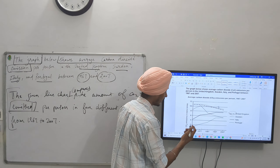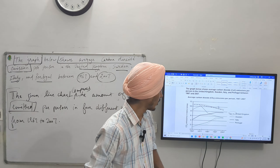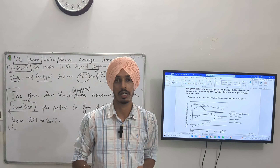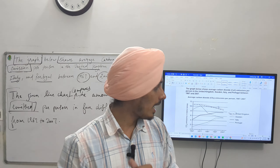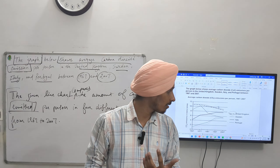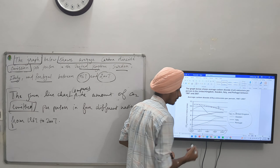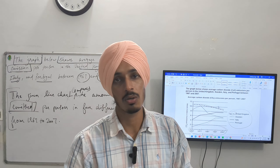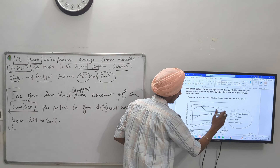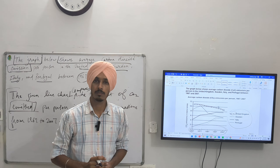We can also write about Portugal, which emitted the least amount of CO2. We are going to make one sentence comparing these two countries — United Kingdom for maximum and Portugal for minimum. This will make our first sentence. Next, we also have to discuss the change over time — whether the amount increased or decreased in each country.